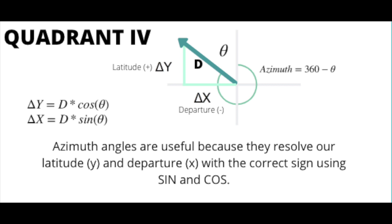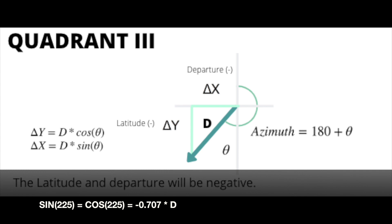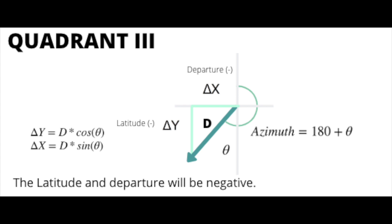We can expect something similar from quadrant three — the departure will be negative. This is because it's controlled by sine of theta, and sine of 225 degrees equals negative 0.707, which is consistent with our expectation. The azimuth angle for quadrant three is 180 degrees plus theta. One thing to note that might confuse people: theta is formed with the vertical, not the horizontal.